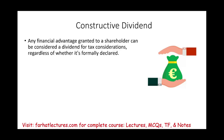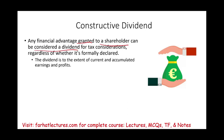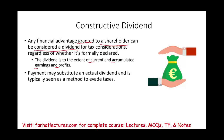Technically, constructive dividend is any financial advantage granted to a shareholder that can be considered a dividend for tax purposes. If any financial advantage given to the shareholder is reclassified as dividend, that's constructive dividend. It can only be considered a dividend if the company has current earnings and profit or accumulated earnings and profit — the dividend rules still apply, requiring CEP and AEP. Simply put, constructive dividend is when a payment substitutes an actual dividend and is considered a form of evading taxes.